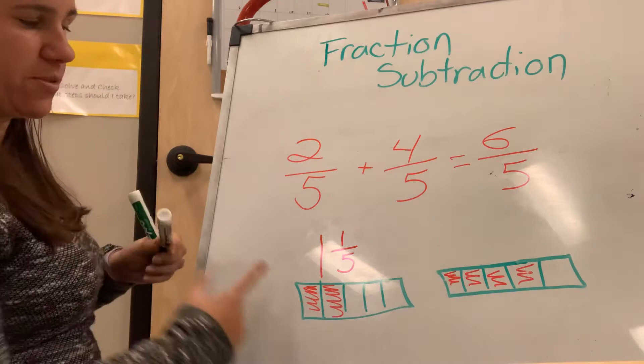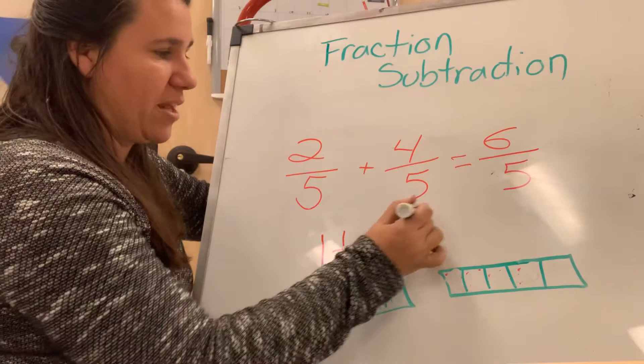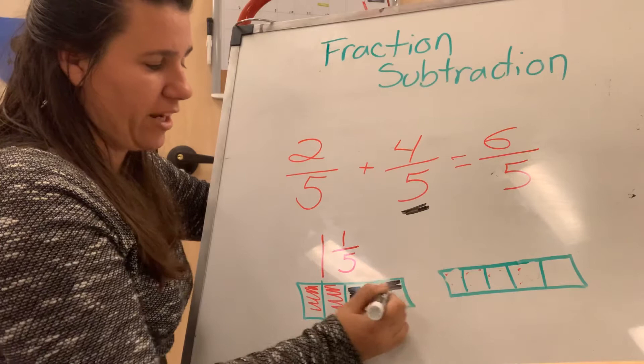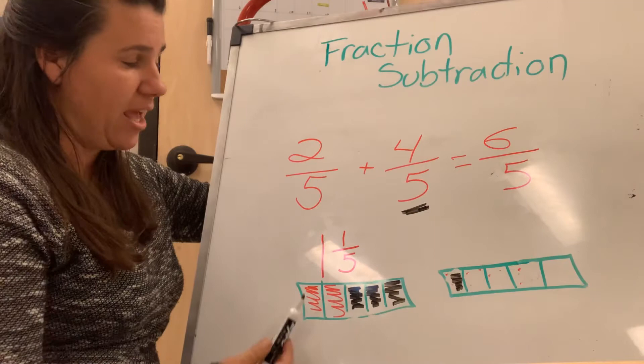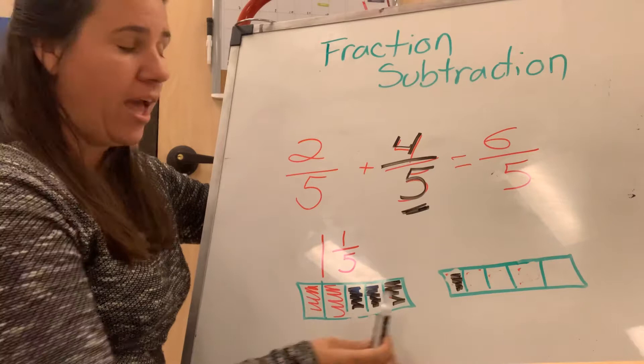I've also seen people do models like this, where they'll go two-fifths right here. And then they'll continue on. It's kind of like counting on. So then they keep those and they'd go four-fifths would be in the black. And so you can see that I've shaded in four-fifths in the black. And I've shaded in two-fifths in the red. And I have one whole and one-fifth.